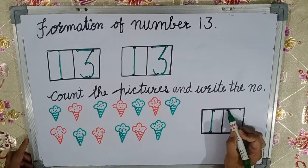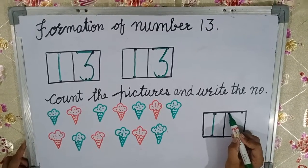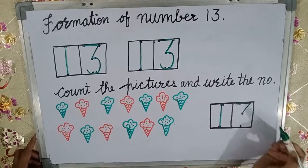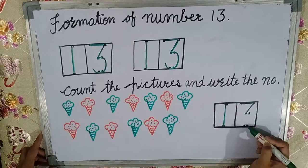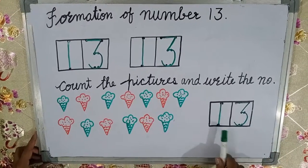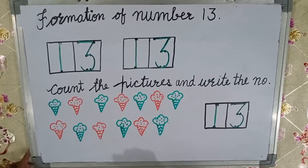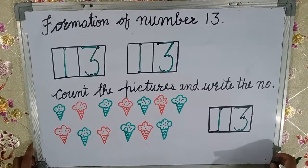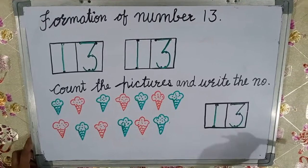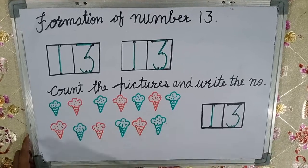One stroke down, we have a one. Then sleeping line, slanting line, put one dot here, one dot here, and make a curve. This is our number thirteen. Now kids, you all know how to write number thirteen, so do practice at your home. Till then, bye bye!